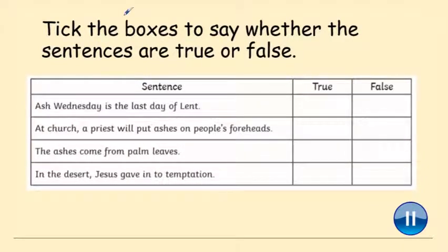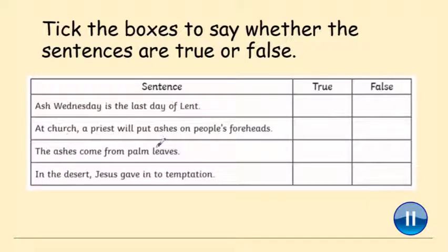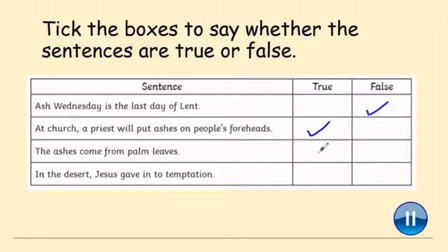Tick the boxes to say whether the sentences are true or false. Ash Wednesday is the last day of Lent — true or false? At church a priest will put ashes on people's foreheads — true or false? The ashes come from palm leaves — true or false? And in the desert Jesus gave into temptation — true or false? Answers: Ash Wednesday is the last day of Lent — false, it's the first day. At church a priest will put ashes on people's foreheads — true. The ashes come from palm leaves — true. And in the desert Jesus gave into temptation — false, he did not.